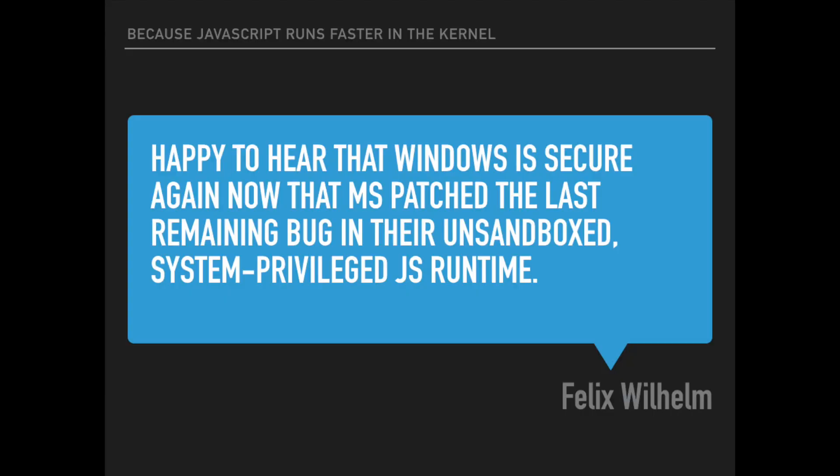Here's a fun quote for context: Microsoft has made the wonderful performance decision to run the JavaScript that Edge is running with system privileges. So you're downloading code off the internet and running it with full system access. What could possibly go wrong?